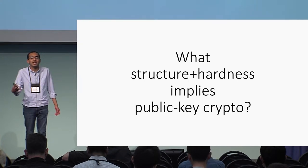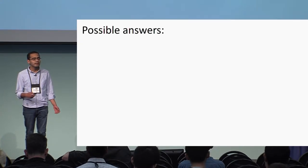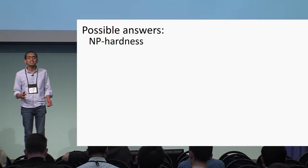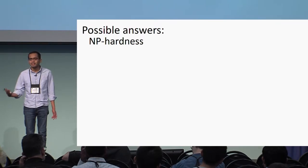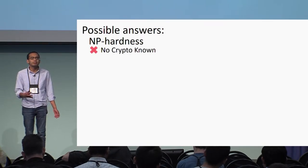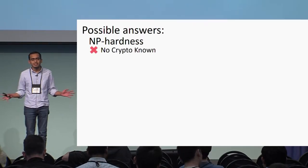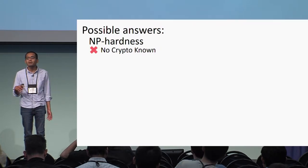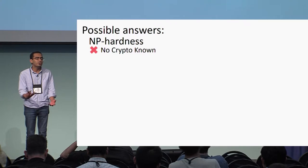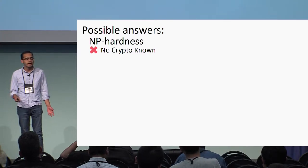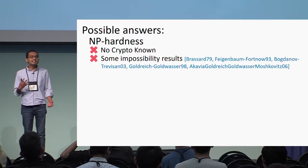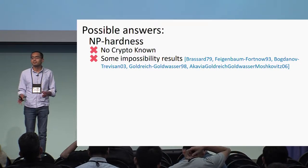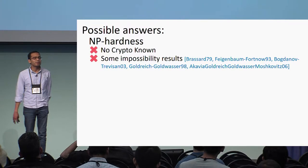In this talk, our goal is a bit different. We want to understand what kind of complexity-theoretic structure implies public key encryption. The goal is twofold: first, we want to understand why public key encryption is so rare — why so few assumptions actually give us public encryption. The hope is that this understanding will enable us to find other assumptions which give us public encryption. The best possible answer would be to say that NP hardness implies public encryption — if P is not equal to NP, then we have public encryption. Unfortunately, this seems too much to hope for; today we don't know any cryptography based on this worst-case assumption, and there are known barriers to constructing cryptography from NP hardness alone.